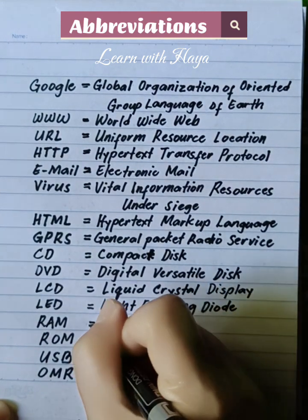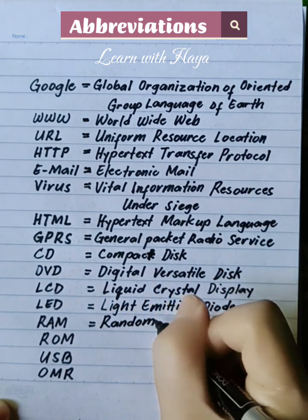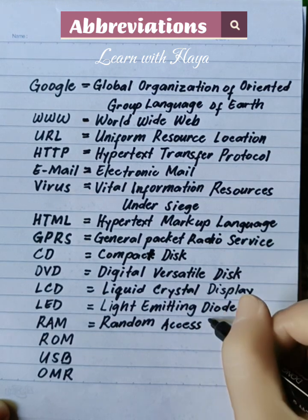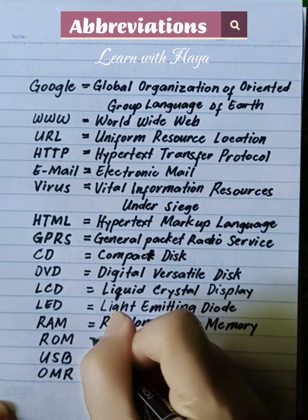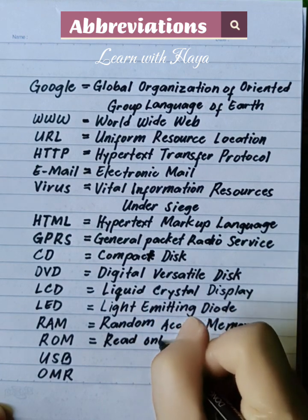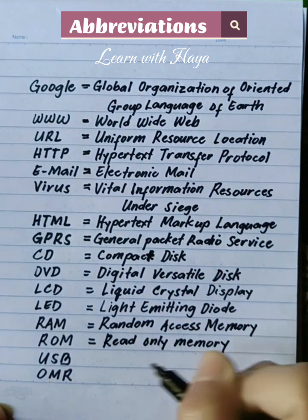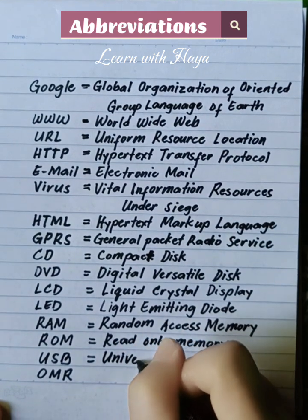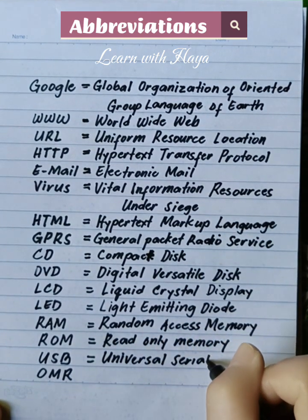RAM: Random Access Memory. ROM: Read Only Memory. USB: Universal Serial Bus.